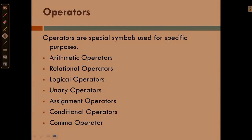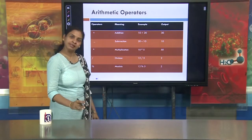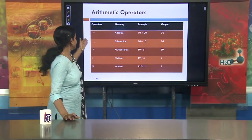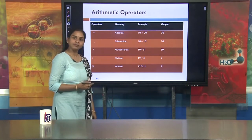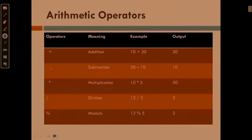First we will discuss what are arithmetic operators and what different operators come under this. There are five operators under arithmetic operators: the first one is addition (+), minus (-) is used for subtraction, the third one (*) is used for multiplication, the fourth one (/) is for division, and the fifth one (%) is the modulo division. Let's see how to use these operators and how to write the syntax while writing programs.